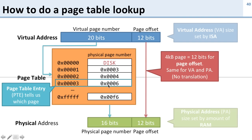Notice that we have different numbers of bits: 16 bits for each physical page entry, and 20 bits for each virtual page entry. That's because we have more virtual pages than we have physical pages, since we have less physical memory than we have virtual address space.